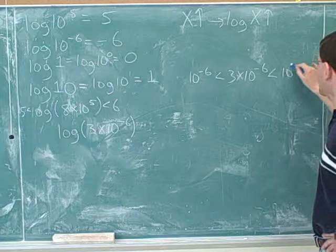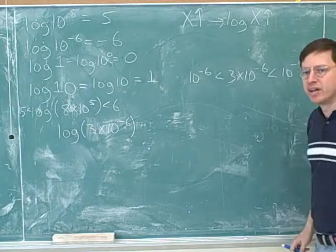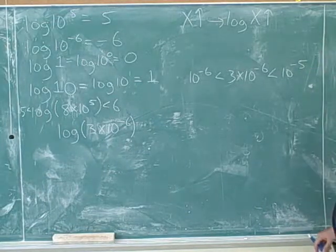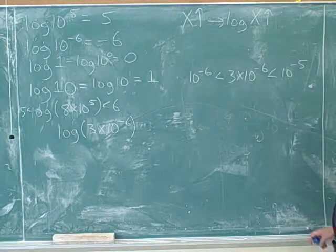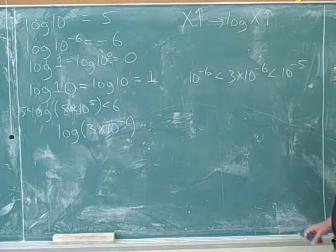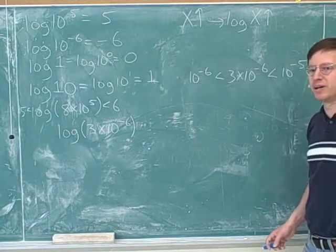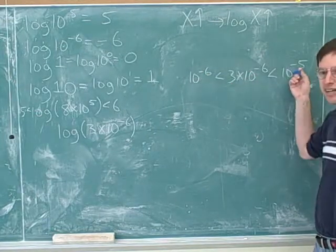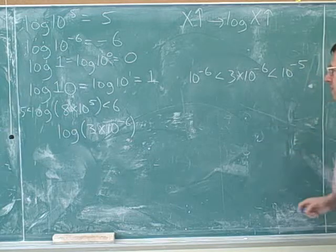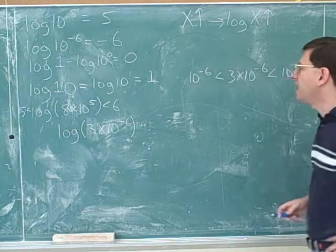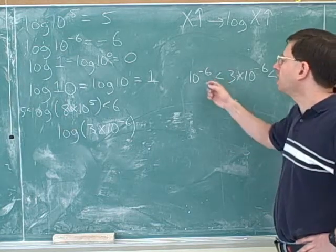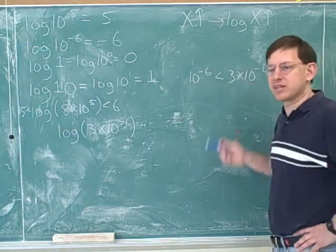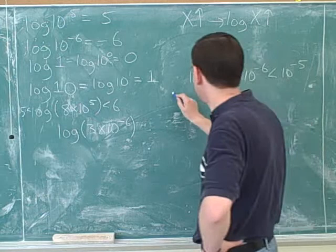What's the next power of 10 that's bigger than this? Well, that would be 10 to the negative 5. So you avoided a common mistake — a lot of students would think they need 10 to the negative 7 here. But no, this is between 10 to the negative 6 and 10 to the negative 5. And only now should we take the logarithms.